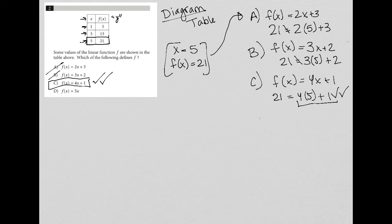If, for whatever reason, you want to just make sure that D doesn't work, you would just, again, try choice D and f of x equals 5x. So instead of f of x, I'm going to write 21. And instead of 5x, I'm going to write 5 times 5. And you can see that that's also not true, meaning we cross out choice D as well. So choice C here is the correct answer.